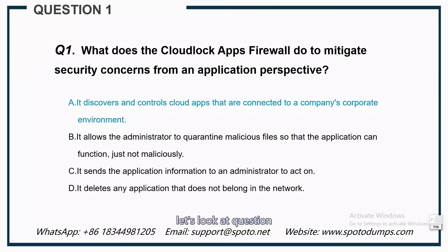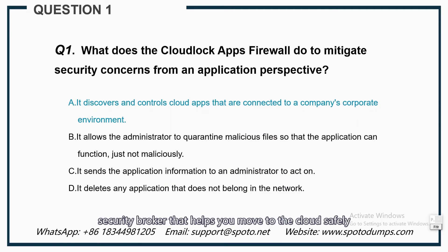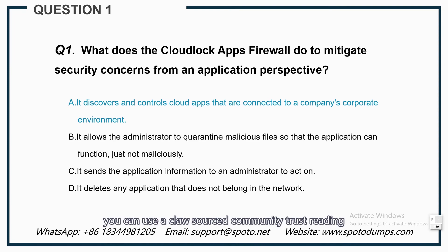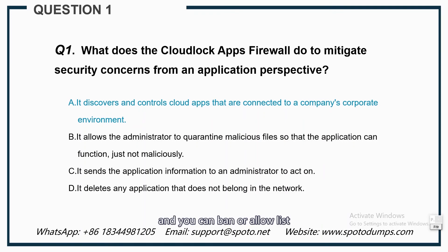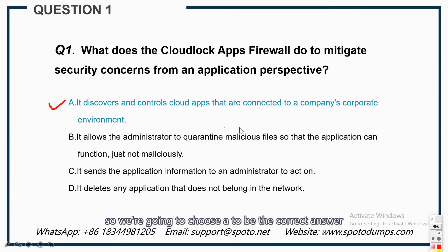Let's look at question one. What does the CloudLock apps firewall do to mitigate security concerns from an application perspective? Cisco CloudLock is a cloud-native cloud access security broker that helps you move to the cloud safely. For app security, the CloudLock apps firewall discovers and controls cloud apps connected to your corporate environment. You can use a cloud-sourced community trust rating for individual apps, and you can ban or allow-list them based on the risk. So the answer is A.